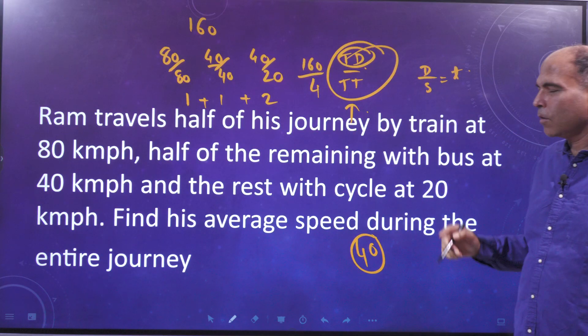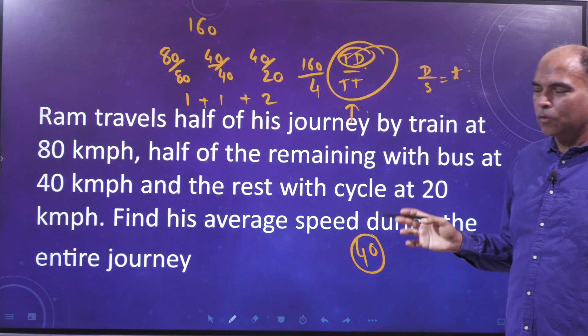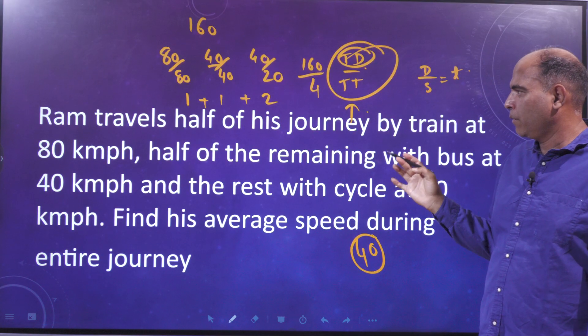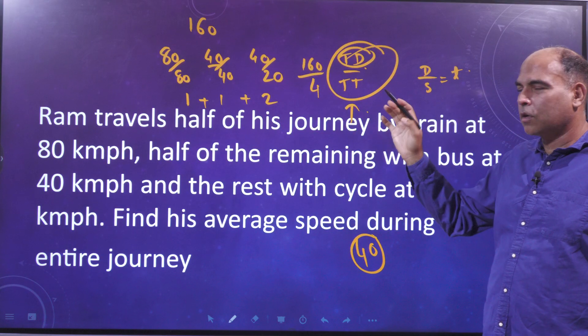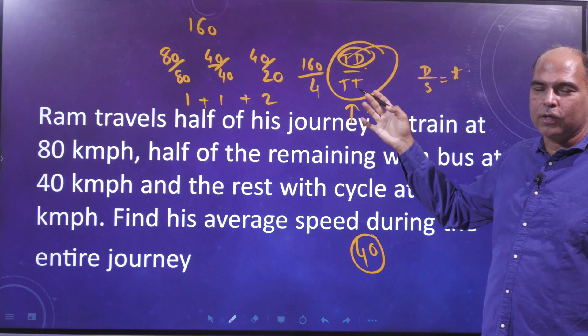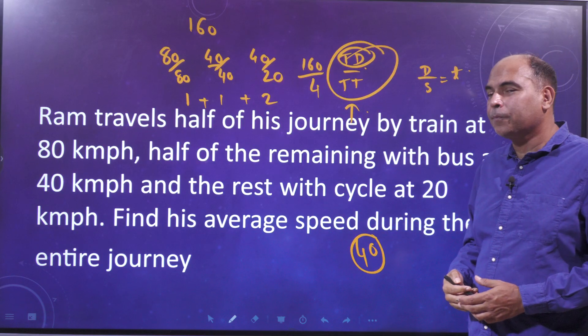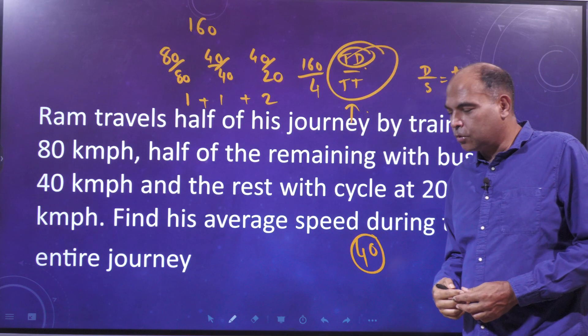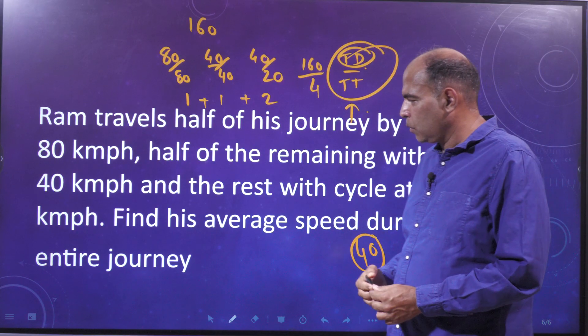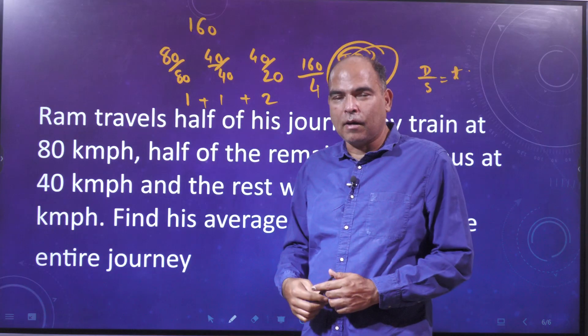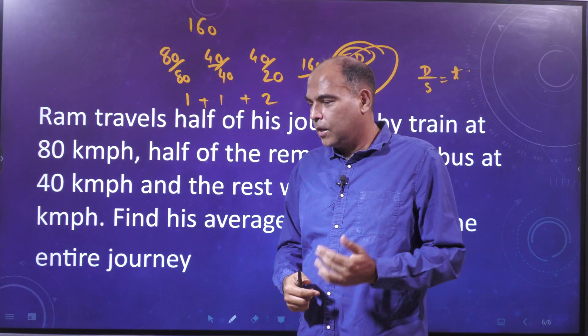For any average speed solution where speeds are changing and distances differ, total distance by total time is the best approach. The key vision you need is what total distance to assume so that calculations become clean and easy. I hope this was valuable — I'll come back with more in the next video. Thank you so much, goodbye.